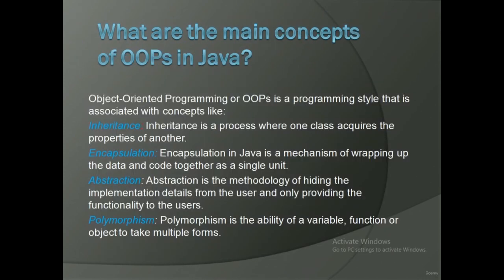What are the main concepts of OOPs in Java? Object-oriented programming is a programming style associated with four concepts: Inheritance — a process where one class acquires the properties of another. Encapsulation — a mechanism of wrapping up the data and code together as a single unit. Abstraction — a methodology of hiding the implementation details from the user and only providing the functionality to users. Polymorphism — the ability of a variable, a function, or an object to take multiple forms.